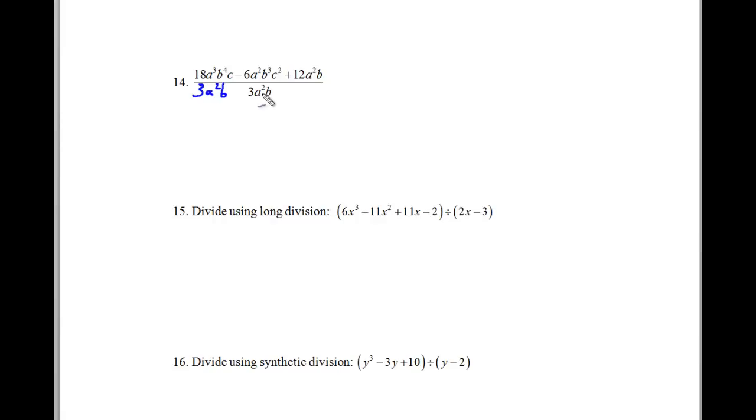And divide each of these by 3a squared b. Now we can do this because this is a monomial. But in problems 15 and 16, these are not monomials. So therefore, you are not going to be able to use this quick technique. So we have 18 divided by 3, which is going to make 6.